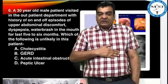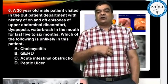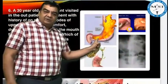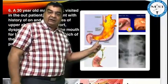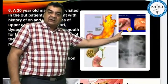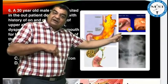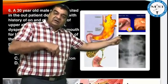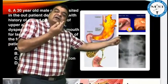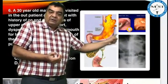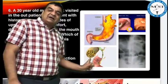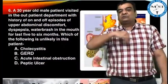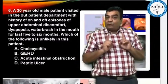The options are: GERD — the best possibility given upper abdominal discomfort, dyspepsia, and water brush. Peptic ulcers — these can also present with upper abdominal discomfort and dyspepsia; in duodenal ulcer, high acid secretion can cause transient reflux and water brush after heavy meals. Cholecystitis — gallbladder inflammation in the right hypochondrium can cause upper abdominal discomfort and dyspepsia, but water brush is unlikely with cholecystitis.